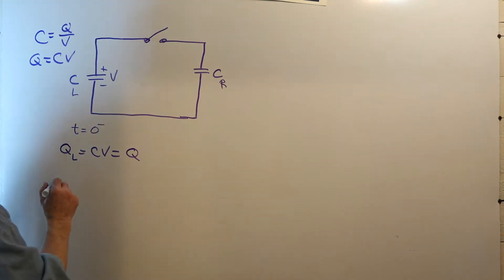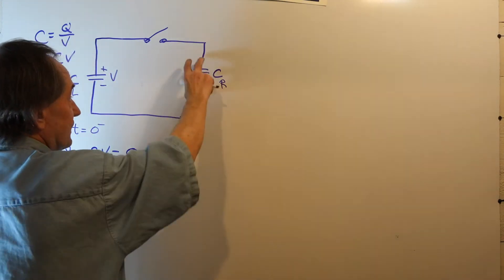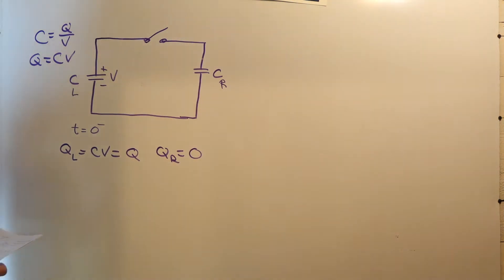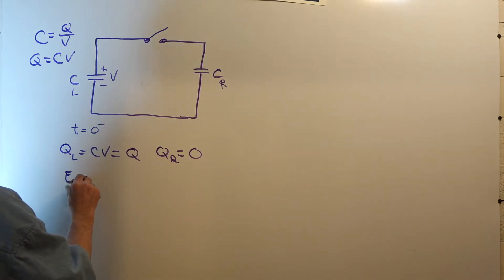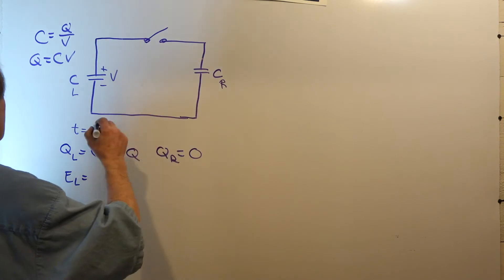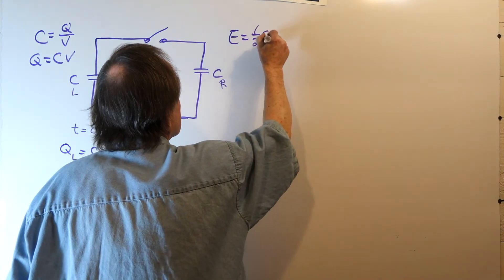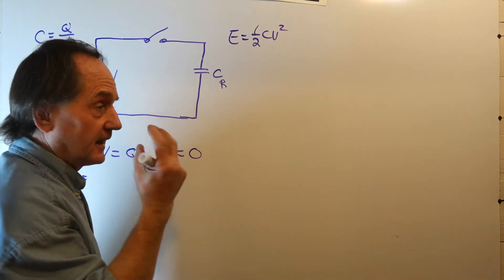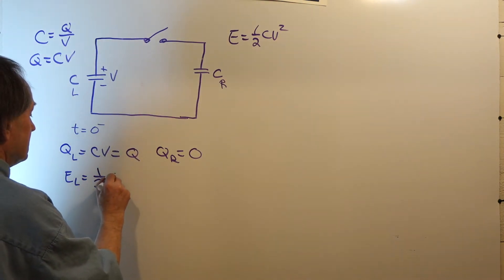How about the charge on the right? Well, there's no voltage across it — it's initially discharged, so the voltage is zero. How about the energy of the system? The energy on the left capacitor: energy in a capacitor is one-half C V squared, stored in the electric field between the plates. So the energy on the left is one-half C V squared.